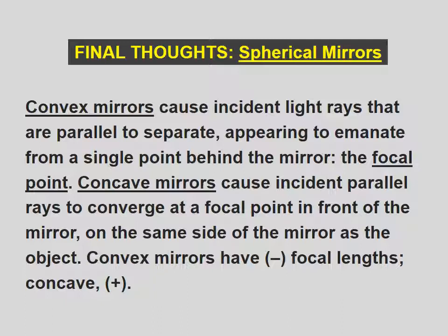Convex mirrors cause incident light rays that are parallel to separate, appearing to emanate from a single point behind the mirror, the focal point. Concave mirrors cause incident parallel rays to converge at a focal point in front of the mirror, on the same side of the mirror as the object. Convex mirrors have negative focal lengths, concave positive.